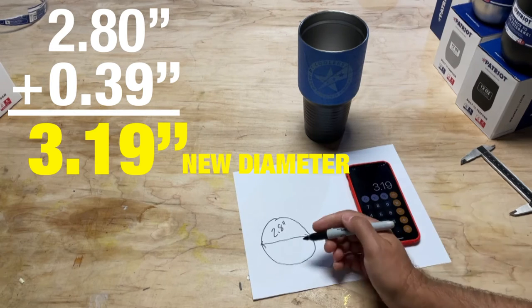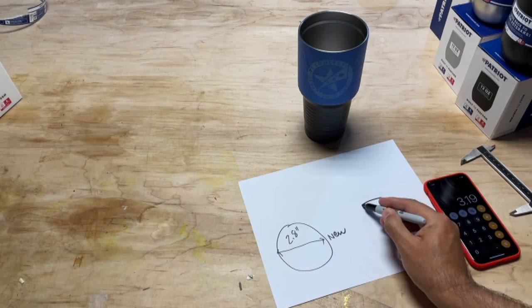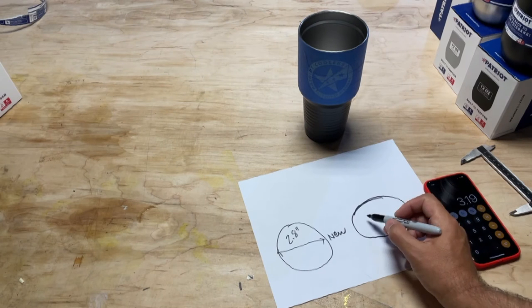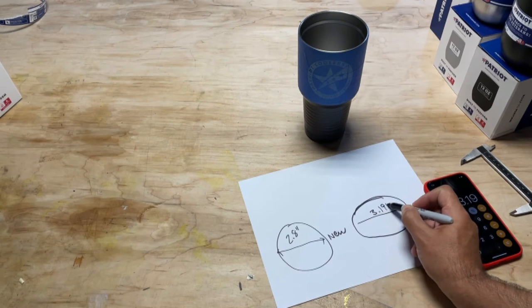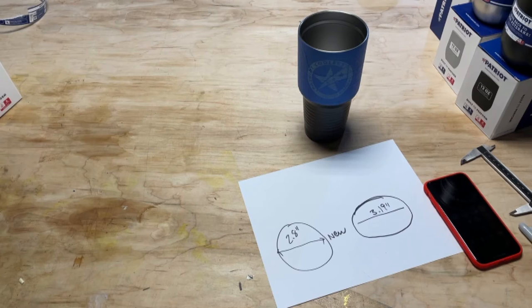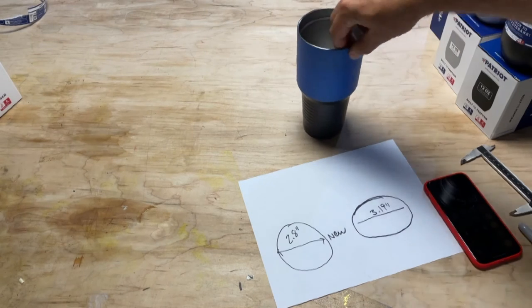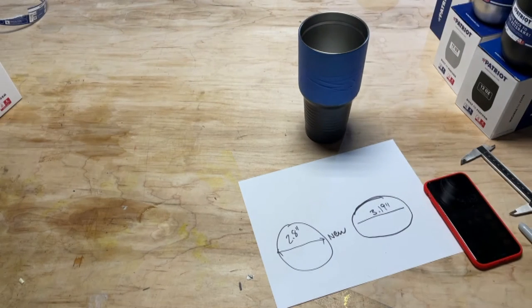So let's go over to the computer, make our adjustment, and engrave that new logo on the other side. Then we'll compare which one looks more like a circle.